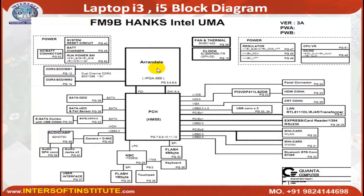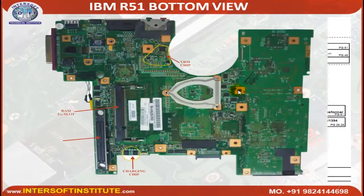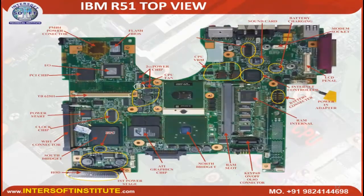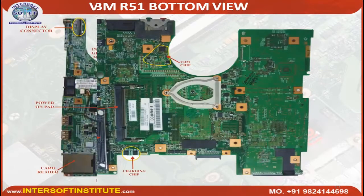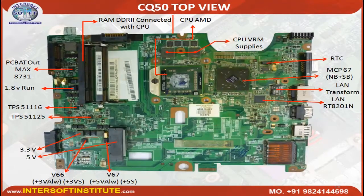Sometimes the graphics IC is also connected with the CPU. This is the R51 bottom view and top view — the top view has the main components and the bottom has additional components. This is a single-chip CQ50 motherboard with CPU, north bridge, and south bridge combined. The RAM is connected with the CPU and there are power sections: 1.8V, 1.5V, 3V, 5V.